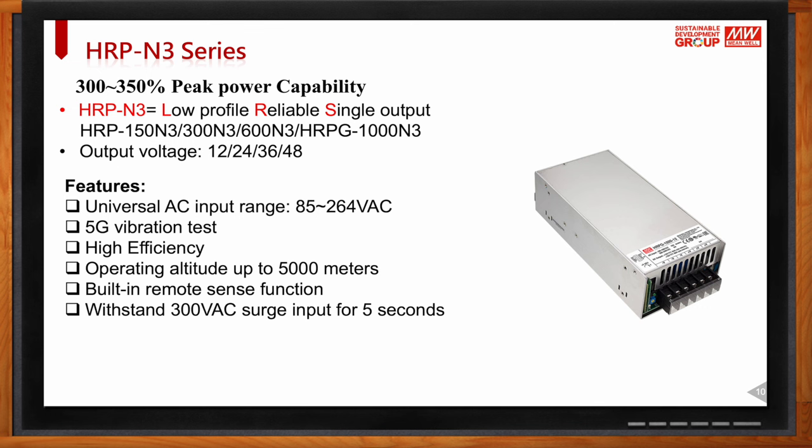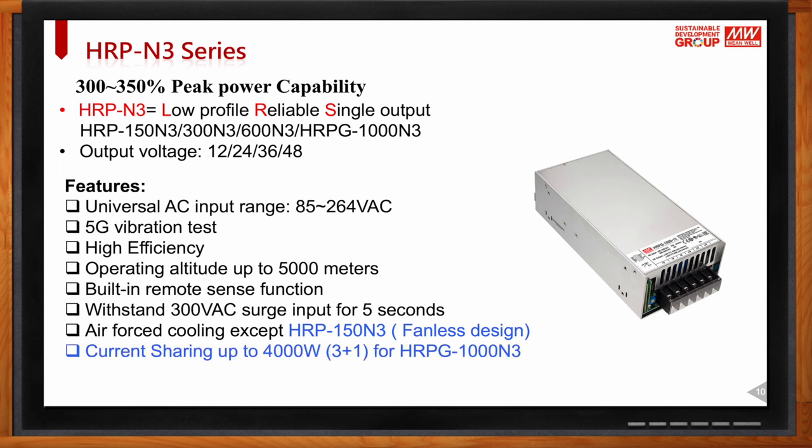The HRP can operate up to 5000 meters altitude, has a built-in remote sense function, and withstands 300V surge input voltage for five seconds. All HRP models use forced-air cooling except the HRP-150, which is fanless. For customers needing more power, the HRP-1000 supports current sharing — up to four units in parallel for up to 4000W total.